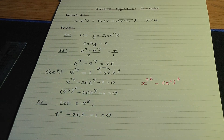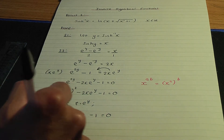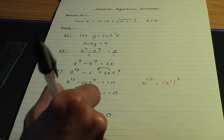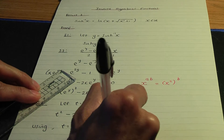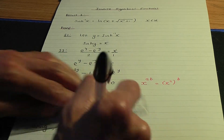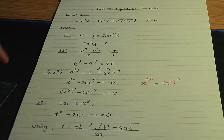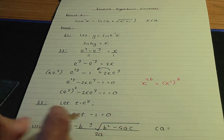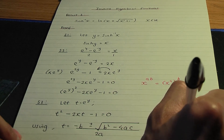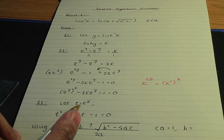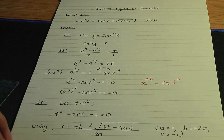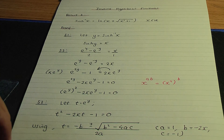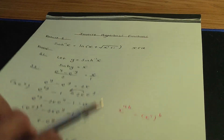Now we have a quadratic to solve. To solve this quadratic, we use the quadratic formula: t equals minus b plus or minus square root of b squared minus 4ac, all over 2a. In this formula, the a term is one (the coefficient of t squared), the b term is minus 2x (the coefficient of t), and c is minus one. Let's substitute these into the formula — fresh page.